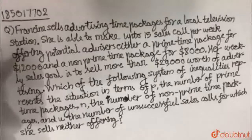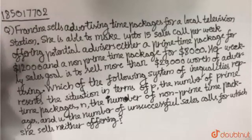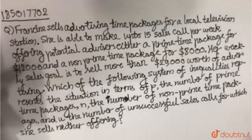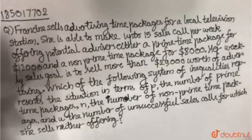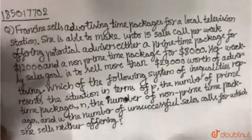Francine sells advertising time packages for a local television station. She is able to make up to 15 calls per week, offering potential advertisers either a prime time package of $12,000 or a non-prime time package of $8,000. Her weekly sales goal is to sell more than $20,000 worth of advertising. Which of the following systems of inequalities represents the situation in terms of P, the number of prime time packages, N, the number of non-prime time packages, and U, the number of unsuccessful calls for which she sells neither offering?